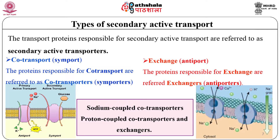There are variations of secondary active transport. First is co-transport, also known as symport, and second is exchange, also known as antiport. The transport proteins responsible for secondary active transport are referred to as secondary active transporters. Proteins responsible for co-transport are specifically called co-transporters or symporters, and proteins responsible for exchange are specifically referred to as exchangers. Sodium is the driving ion for many co-transporters as well as many exchangers. Therefore these transport proteins may also be referred to as sodium-coupled co-transporters. Similarly, there are many examples of proton-coupled co-transporters and exchangers too.